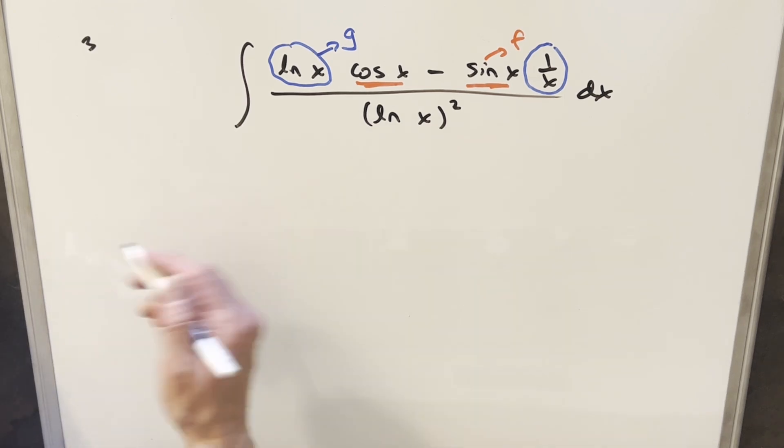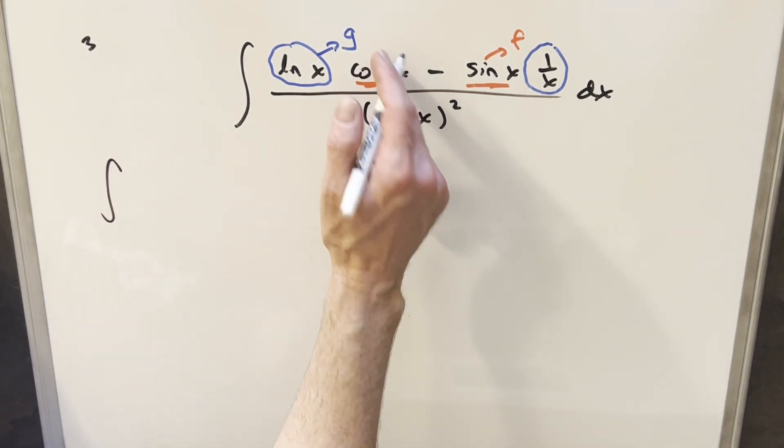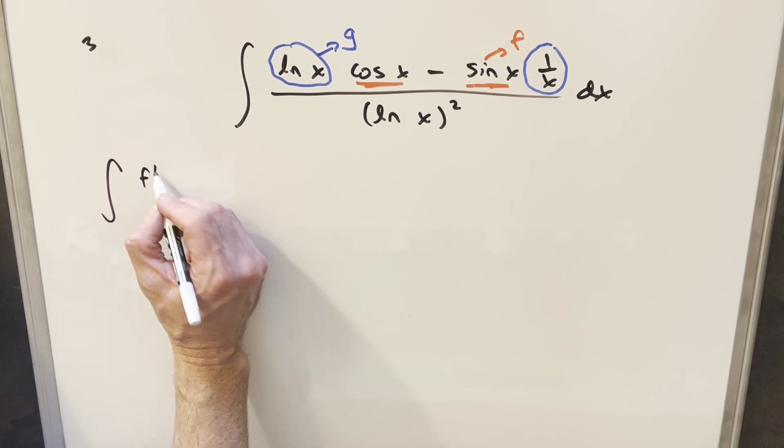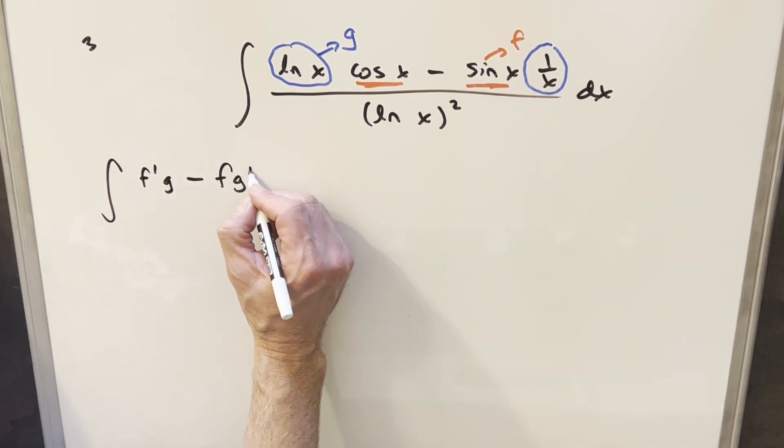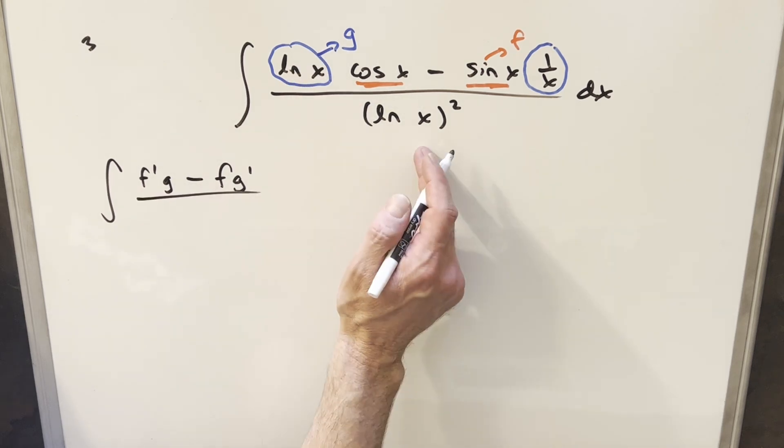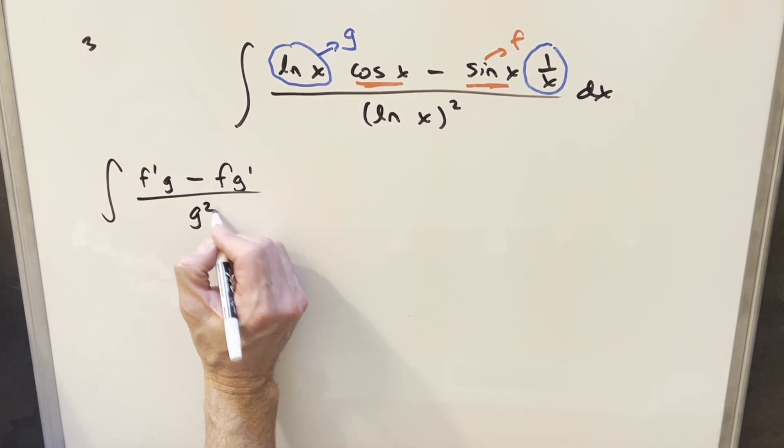If we just rewrite the integral using this f and g notation, so here's our f prime. So we have in the numerator f prime times g, and then this part over here is just f g prime. And again, we have our ln x in the denominator, so this here is actually just g squared.